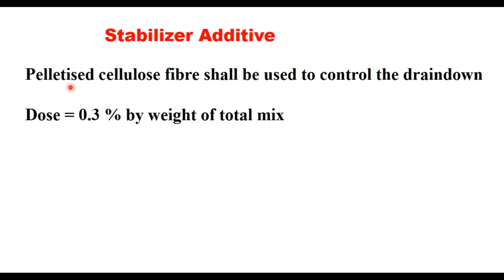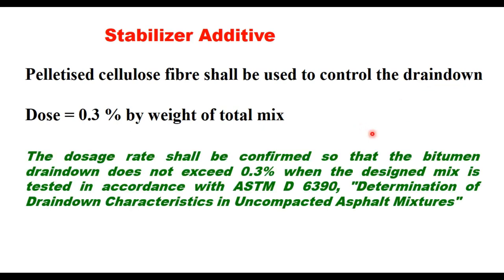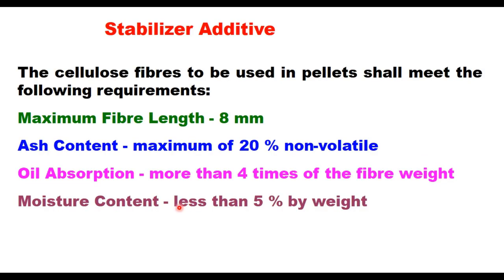The stabilizer is pelletized cellulose fiber, used to control drain-down. The dose should be around 0.3% by weight of the total mix, but is decided based on the drain-down test, which is given in ASTM D6390. The cellulose fibers used in pellets should have a maximum fiber length of 8 mm, ash content maximum of 20% non-volatile, oil absorption not more than 4 times the fiber weight, and moisture content less than 5% by weight.